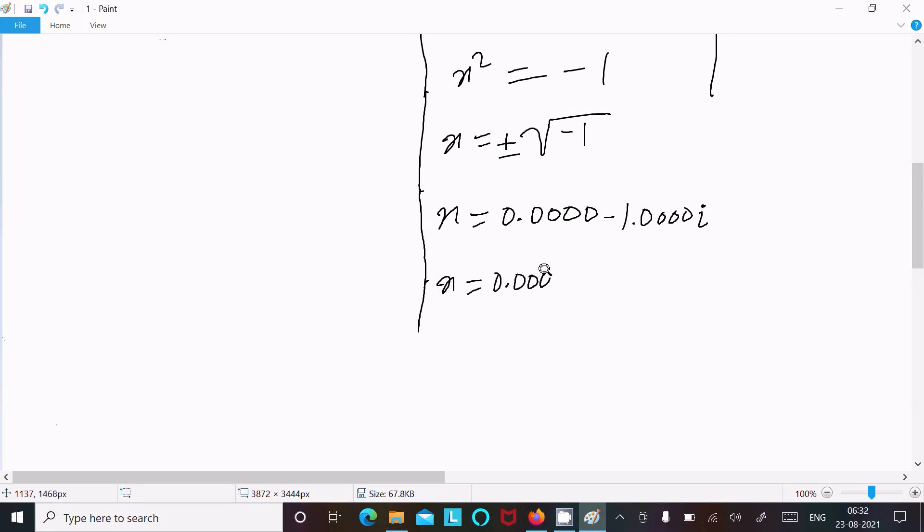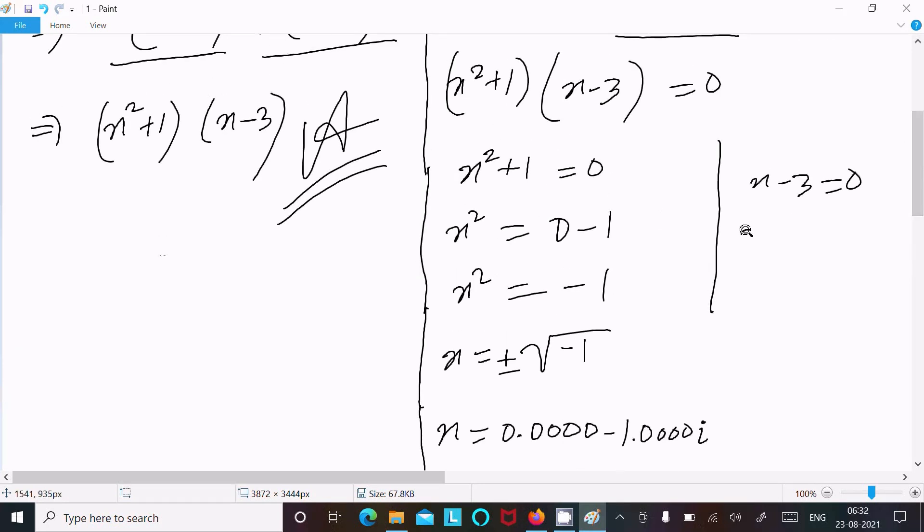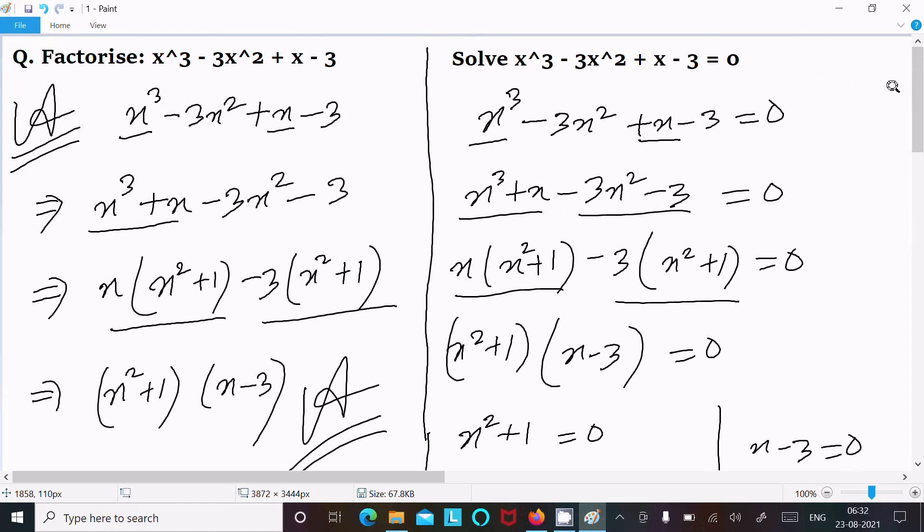And here x - 3, so x = 0 + 3, x = 3. So this is the answer, so this is the real number answer and this is the imaginary number answer. So this is the way we can find the value of x and this is the way we can do the factorization.